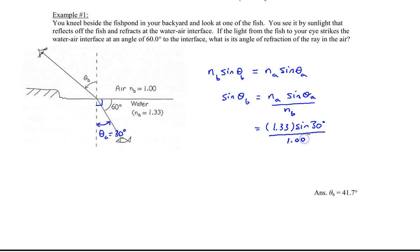The sine of theta b equals 0.665. If you do the arc sine of 0.665, you get an angle of 41.7 degrees.